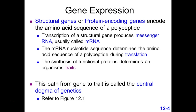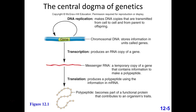Just like in languages, going from one language to another is called translation. The proteins and polypeptides we make give rise to the organism's traits — what they look like, what they can do. This flow of information from DNA to RNA to proteins is referred to as the central dogma of genetics, or sometimes just the central dogma.